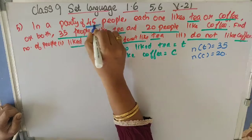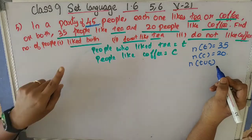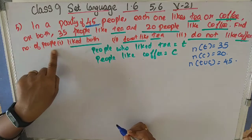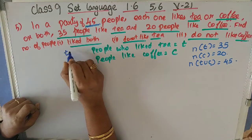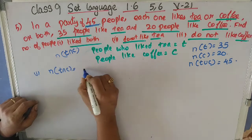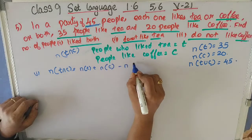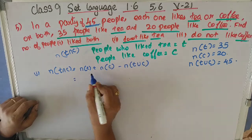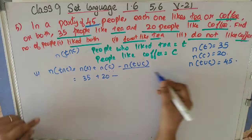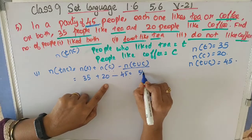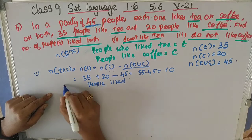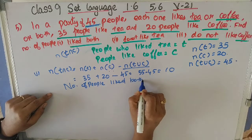Here, 45 people each like tea or coffee or both, so it is T union C which equals 45. Now we have to find the number of people who liked both tea and coffee, that is N of T intersection C. We know N(T∩C) = N(T) + N(C) − N(T∪C) = 35 + 20 − 45 = 10. So the number of people who liked both tea and coffee is 10.